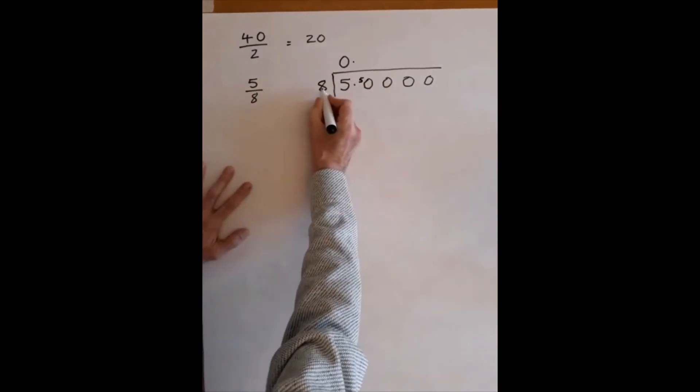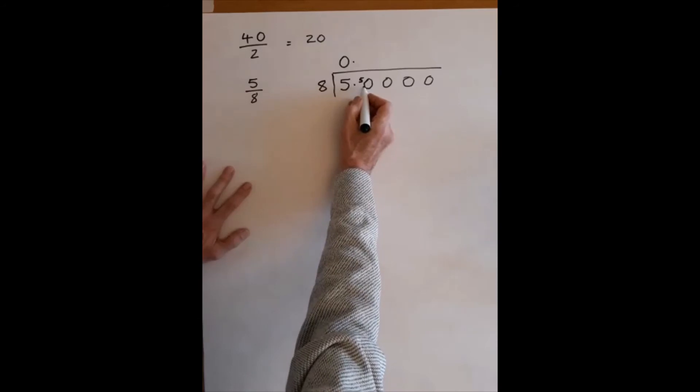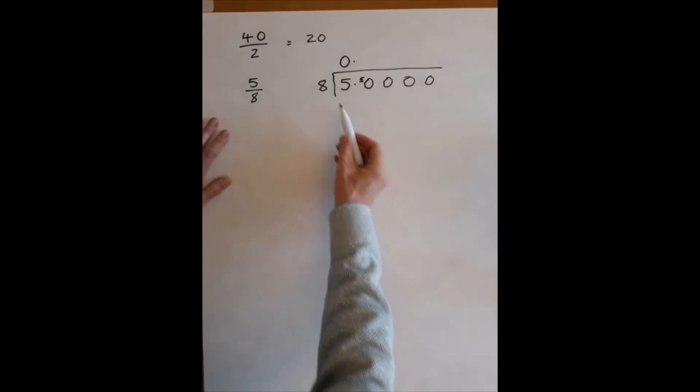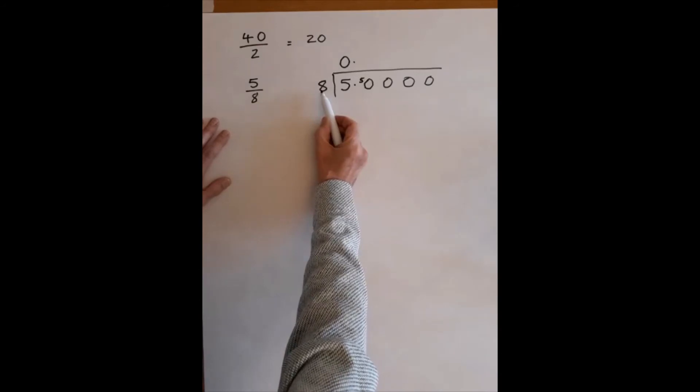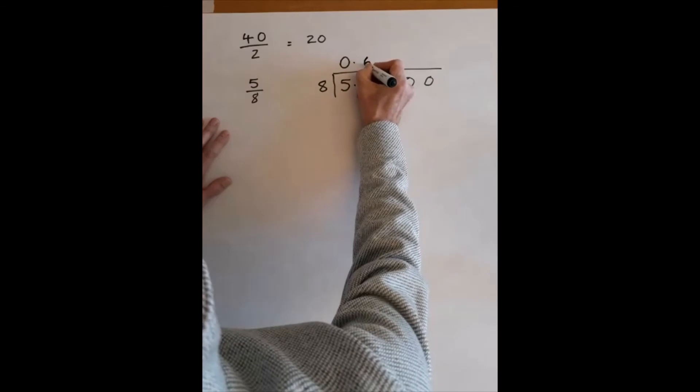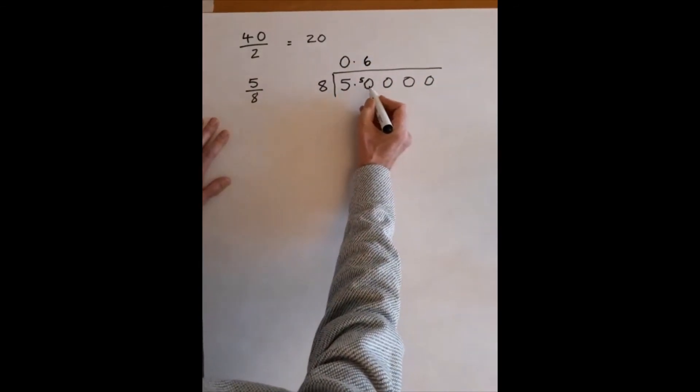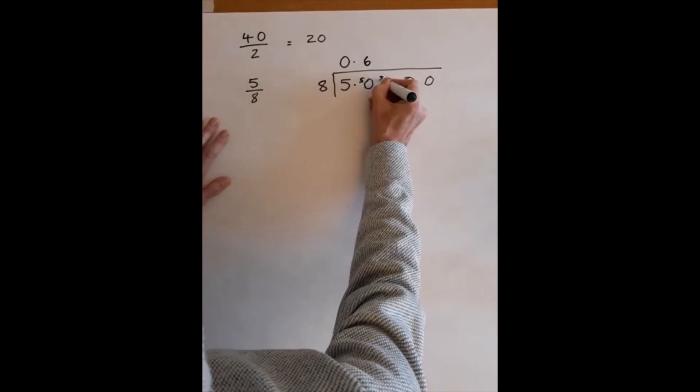How many times does 8 go into 50? So 6 times 8 make 48, so 8 into 50, there are 6 of them. 6 times 8 are 48. 48 and 50, that leaves us a difference of 2.